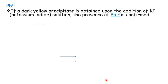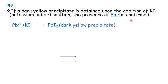For lead ions, if a dark yellow precipitate is obtained upon the addition of potassium iodide solution, the presence of lead divalent ion is confirmed. Lead ion on reaction with potassium iodide gives a dark yellow precipitate. So whenever you get a dark yellow precipitate, you should know that the salt contains divalent lead ion.